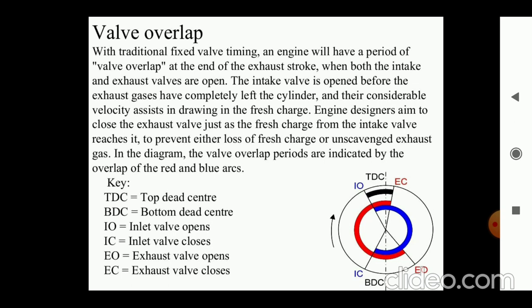Now, engine designers aim to close the exhaust valve just as the fresh charge from the intake valve reaches to it. What the engineers or the design engineer wants to close, exactly on 180 degrees, that is at the completion of suction stroke, at the completion of intake stroke, the inlet valve must be closed. But does it happen actually? No. It can be open up to 35 degrees up next, up to the next cycle. And what happens? To prevent either losses of fresh charge or unscavenged exhaust gas. In this diagram, the valve overlap period is indicated by the overlap of the red and blue arrows. Now you can see with the help of diagram how the blue line and red lines are overlapped at the dotted point, where exactly 35 degrees to the BDC, and exactly 10 degrees after the TDC, that is denoted by EC. What are the notations we have provided are written on the left side of your screen.